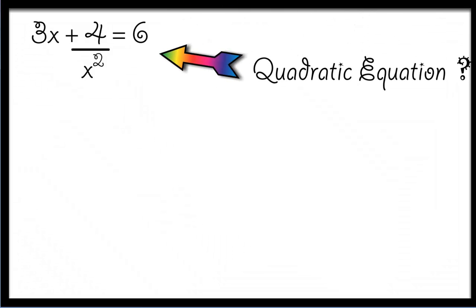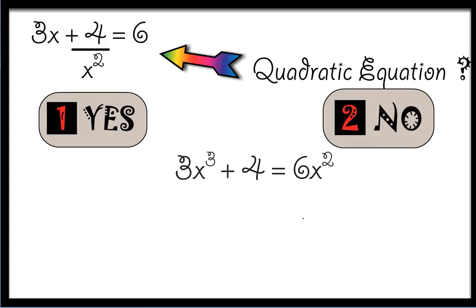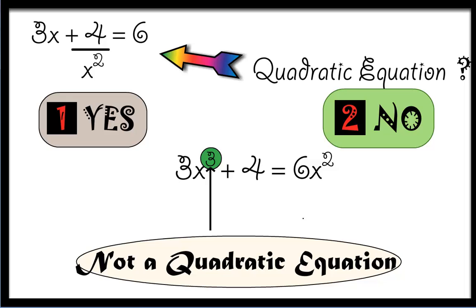3x plus 4 upon x² equals 6. Is that a quadratic equation? Let's find out. To find a solution for this equation, we first need to make some simple algebraic manipulations. Let's multiply both sides of this equation by x². We get 3x³ plus 4 equals 6x². This is clearly not a quadratic equation because of the 3 in the index.